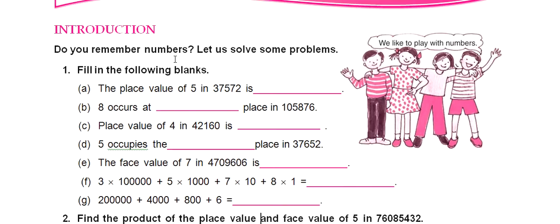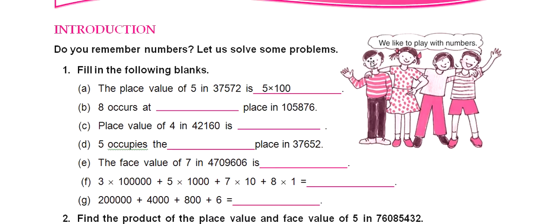Let's start from here. First is fill in the blanks, part A: the place value of 5 in 37,572. Place value means which place the digit is in, and value means we multiply the digit by that place. Here, 5 is in the hundreds place, so we multiply 5 by 100. The answer is 500.